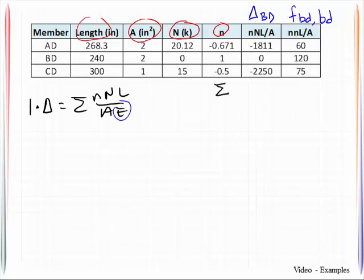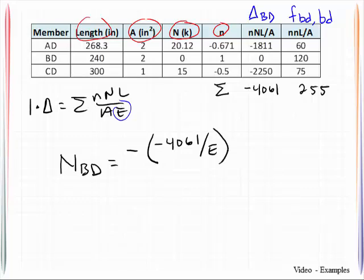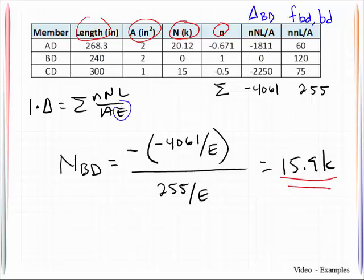So what I've got to do is go ahead and sum up both of those columns. I would get negative 4061 and this one comes up to be 255. So in order to get the redundant force NBD I plug that back into my compatibility equation which is this negative 4061 divided by E and divided by the flexibility coefficient which is 255 divided by E and that is equal to 15.9 kips. The positive value by the way tells me that I did assume correctly and it is indeed in tension.